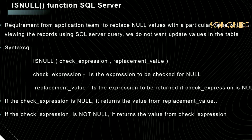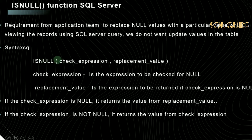The syntax of the ISNULL system function is: ISNULL(check_expression, replacement_value). The check_expression is the expression to be checked for null, and the replacement_value is the value to be returned if the check_expression is null. If the check_expression is null, it returns the value from replacement_value.